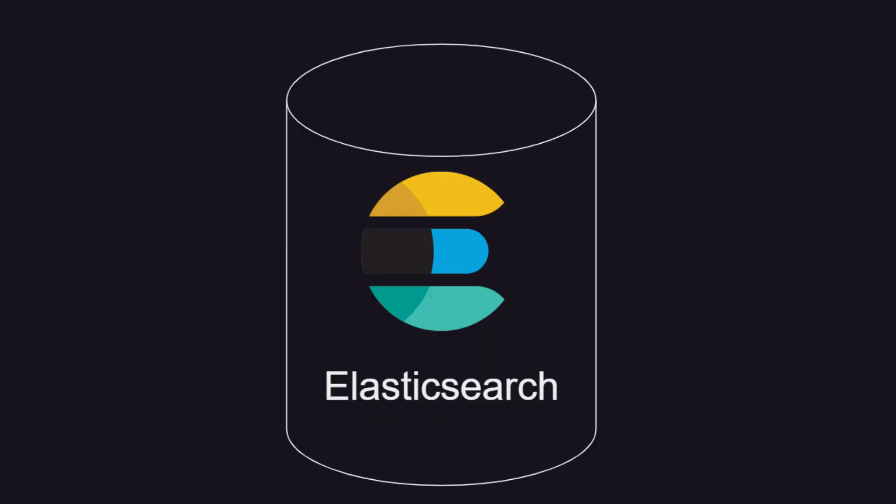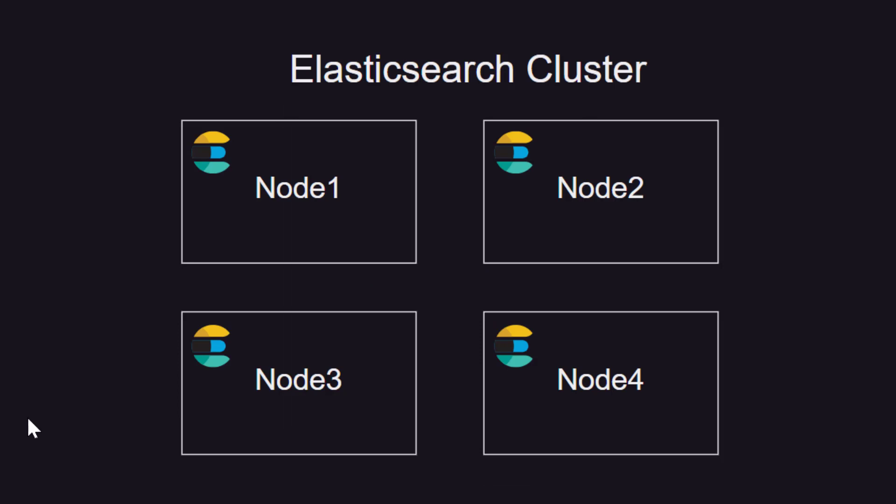So what is Elasticsearch? Elasticsearch is basically a distributed database where data is stored as JSON documents. When you say distributed database, that means the database can run in multiple nodes at a time. In this example, you have an Elasticsearch cluster running in four nodes — that means the database is running in four servers. The data is distributed, you can have replication, and you can add more nodes in the future. So this database is horizontally scalable.